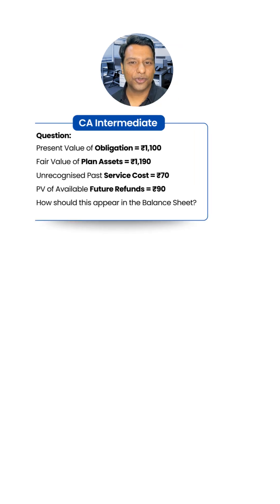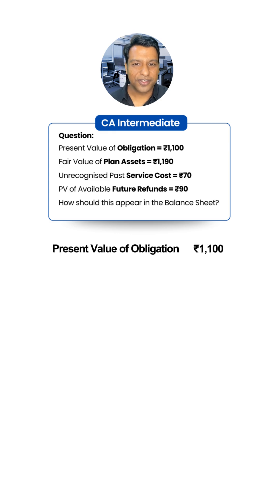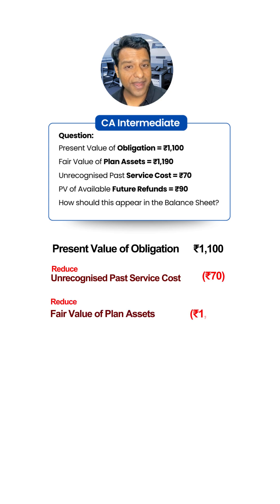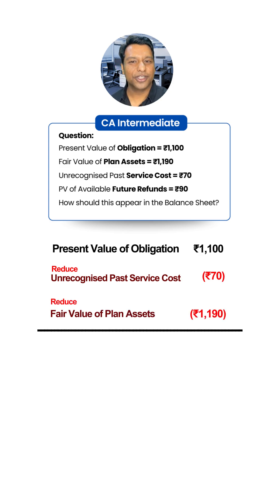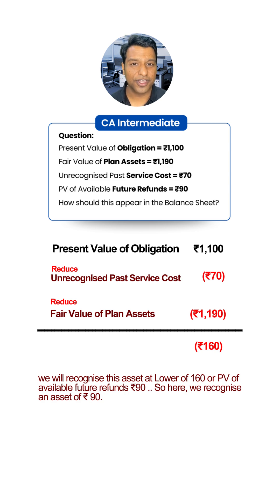Applying what we learned to this question: take present value of obligation — 1100 rupees — reduce unrecognized past service cost of 70 rupees, and reduce fair value of plan assets of 1190 rupees. This amount comes to negative 160, so we know it's an asset. We recognize this asset at the lower of 160 or PV of available future refunds of 90 rupees. So here we recognize an asset of 90 rupees.